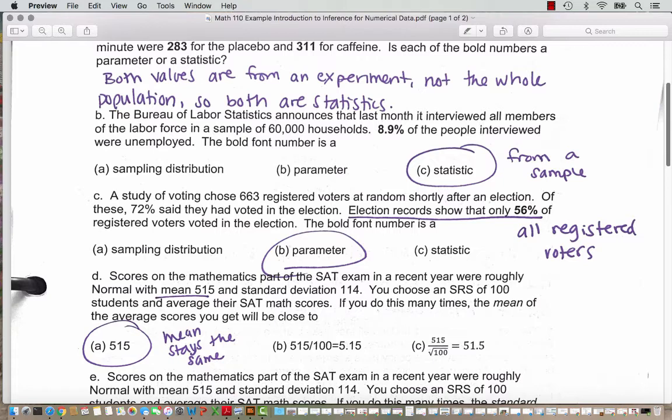Question C. A study of voting chose 663 registered voters at random shortly after an election. Of these, 72% said that they had voted in the election. Election records show that only 56% of registered voters voted in the election. The bold font number is a parameter. So the bold number is the 56%. That comes from election records, and it's data from all registered voters. So all registered voters are the population, not a sample.